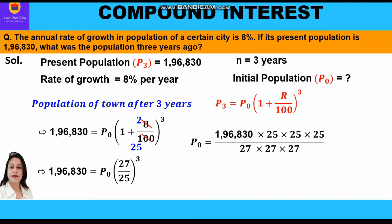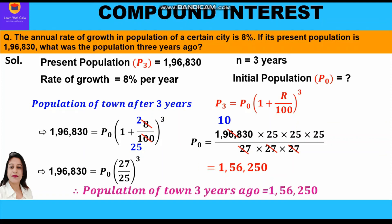Cross multiplying: P₀ = 196,830 × (25 × 25 × 25) / (27 × 27 × 27). Now 196,830 cancels with 27³, giving us 10. So P₀ = 10 × 25 × 25 × 25 = 156,250. Therefore, the population of the town three years ago was 156,250.